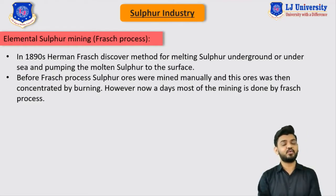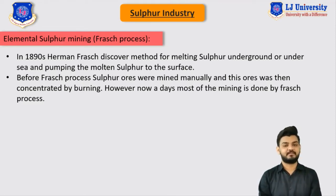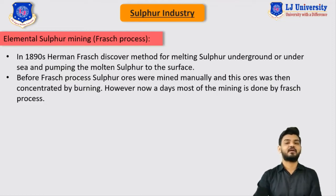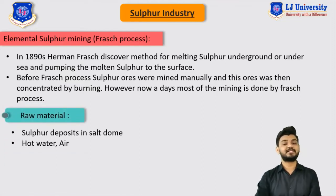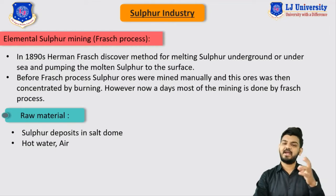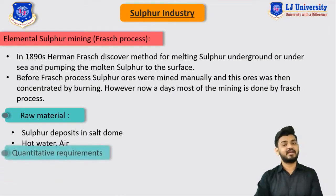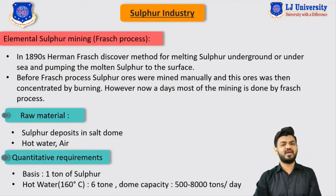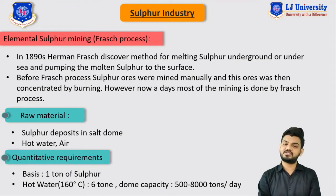Let me now explain the Frasch process in depth with its complete concept. But first, let me discuss the raw materials and their quantitative requirements. The basic raw material is the sulphur deposit deep in the earth's ground. The secondary raw materials are hot water and air. We require around 6 tons of hot water for the production of 1 ton of sulphur.